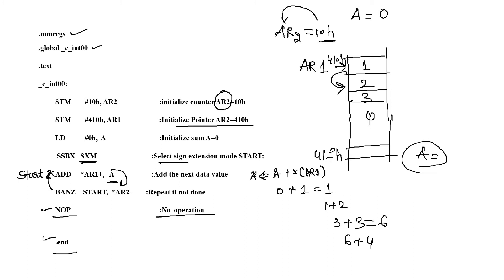This ends the addition of signed numbers starting from hexadecimal address 410h to the last address 41Fh. The result, once computed, is stored in the accumulator because the accumulator is the destination register.